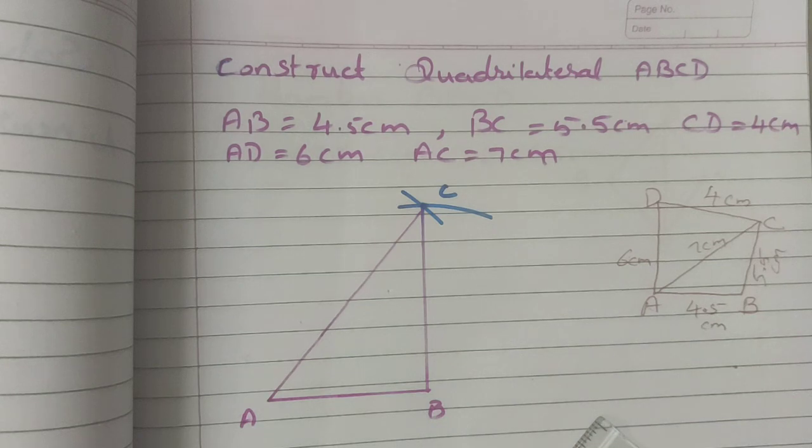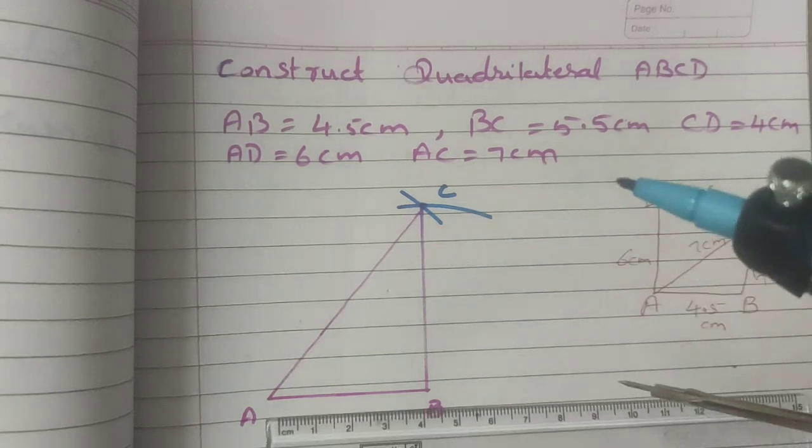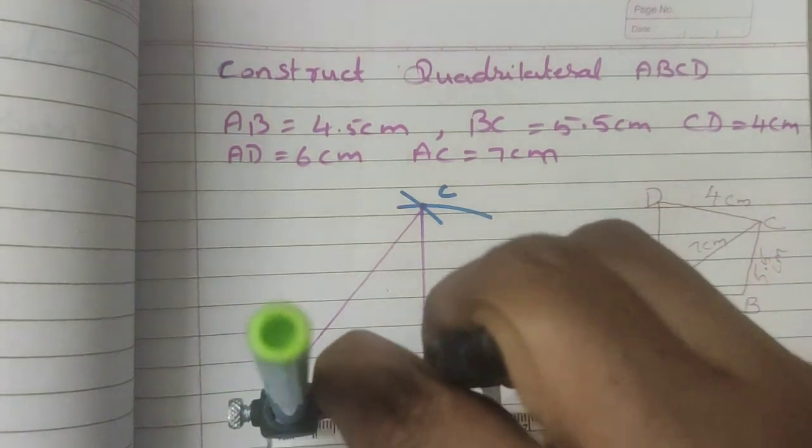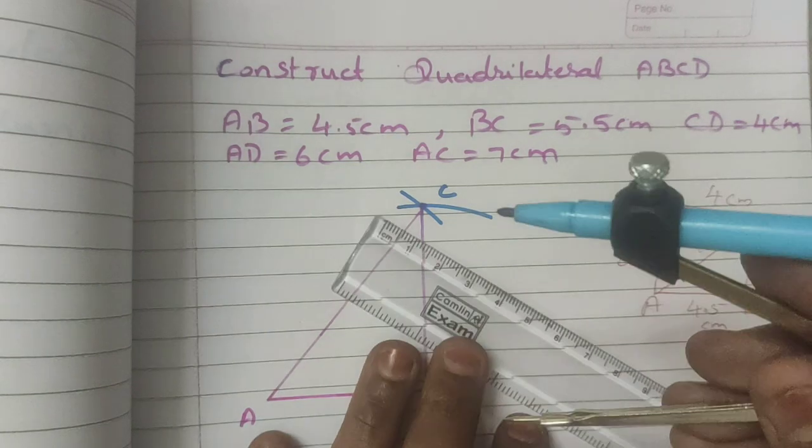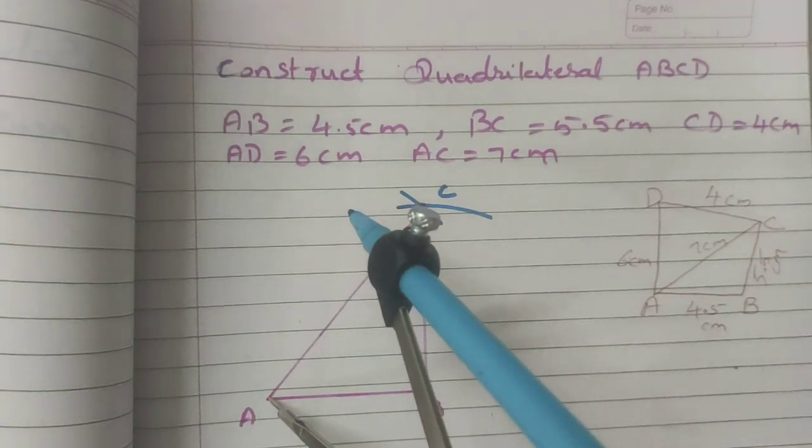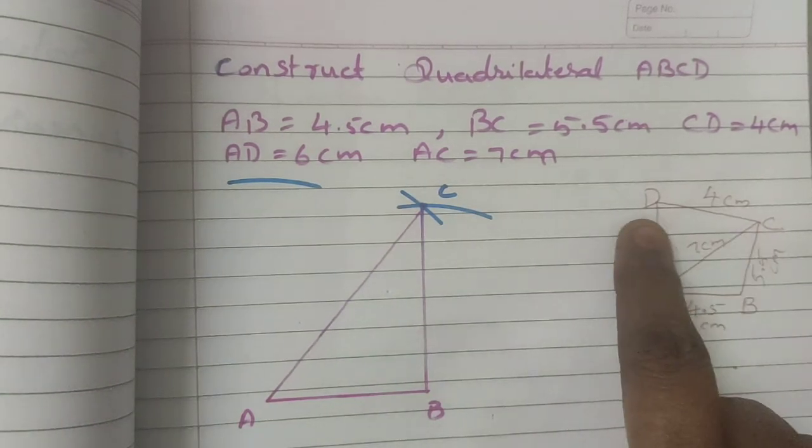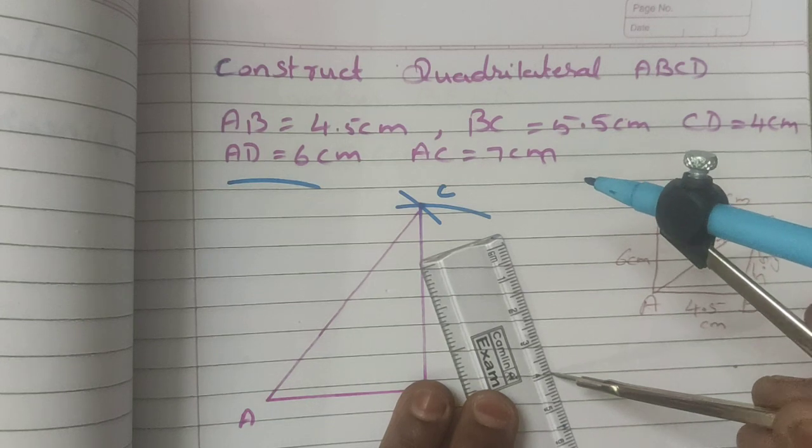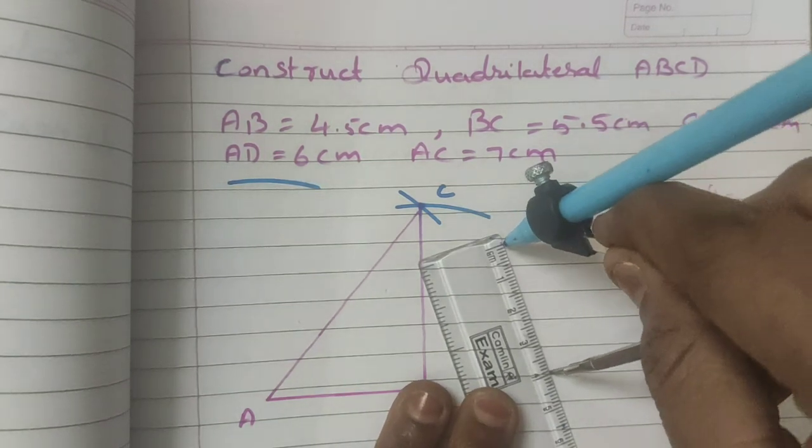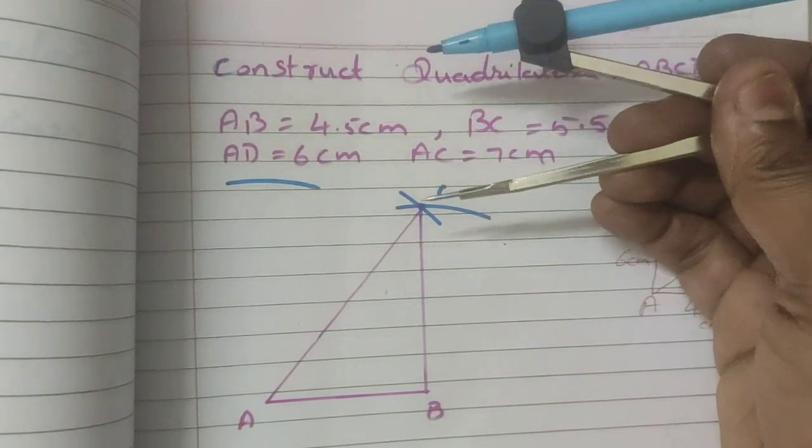AD is measurement 6 cm. So in your compass, take your compass, measure 6 cm in your compass. Keep your compass needle at A, mark the arc. Next, 4 cm from C, mark the arc. So 4 cm. Measure in your compass, 4 cm. CD is 4 cm. So keep your compass needle at C, mark the arc.